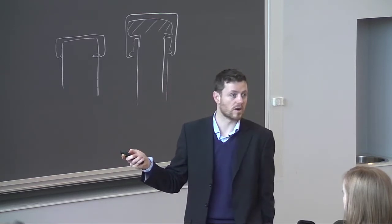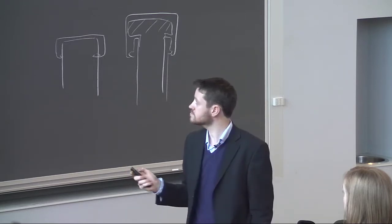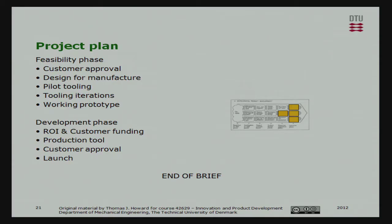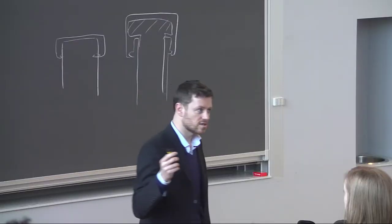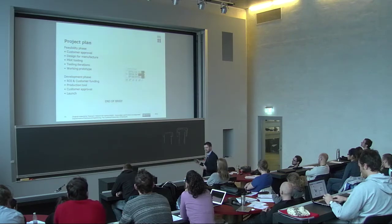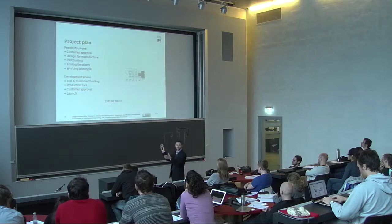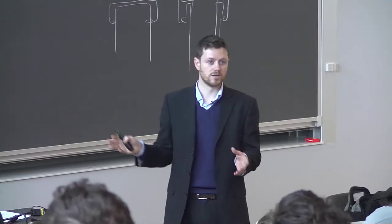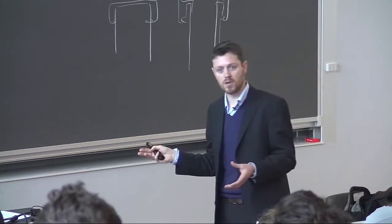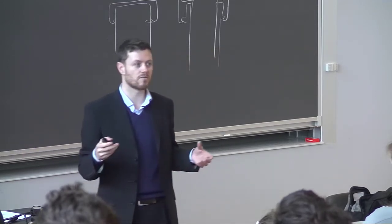Then we have another gate where we select just one concept to go through. Then a feasibility phase — looking at pilot tooling, tooling iterations, working prototypes, and so on. Finally, a development phase where you actually produce and launch the product. That's a typical product brief from this company. The interface between the innovation department, the business area, and the marketing department sets all of these criteria. At the moment you're still doing that for your projects — you need to set your musts and desirables soon to decide what your product will actually achieve.